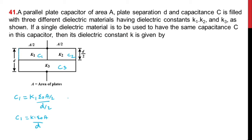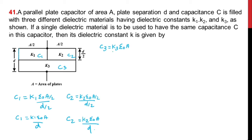Similarly, C2 = K2 × ε₀ × (A/2) / (D/2), and again the 2s cancel, so C2 = K2 × ε₀ × A / D. For C3, it is filled such that the distance is D/2 but the area does not change, so C3 = K3 × ε₀ × A / (D/2) = 2 × K3 × ε₀ × A / D.